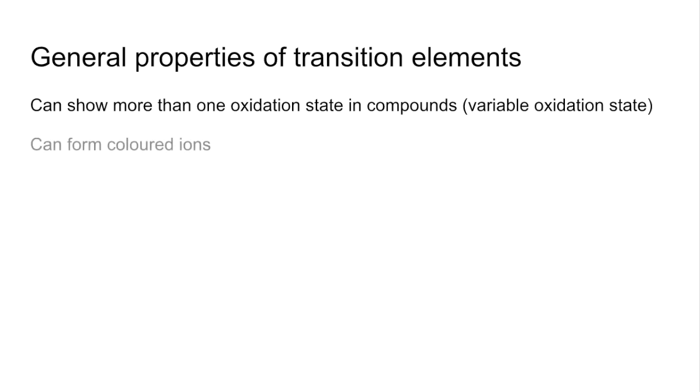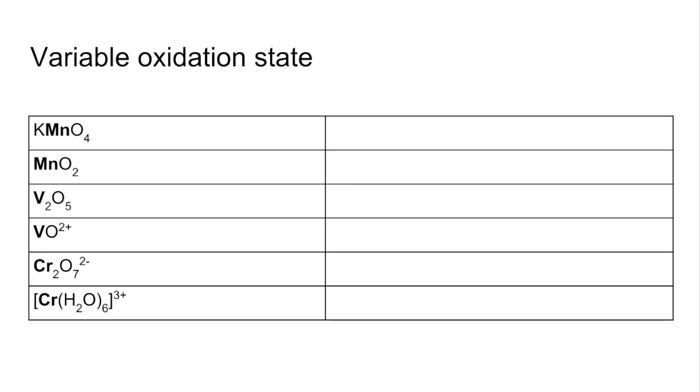These are extra to the generic metallic properties. They can show more than one oxidation state in their compounds, or variable oxidation state. They can form coloured ions and they can act as catalysts. We'll just look at each of those in turn. We'll start with variable oxidation state.